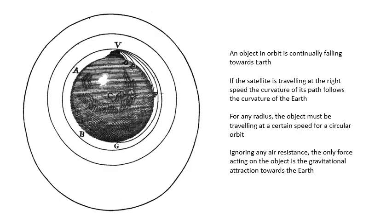This drawing was actually drawn by Isaac Newton and it explains how an object can stay in orbit around the Earth. Basically, if you fire a cannonball off the top of a mountain, ignoring air resistance, if it was traveling fast enough it would be falling and falling towards Earth but never actually hitting it, because its path would follow the curvature of the Earth.